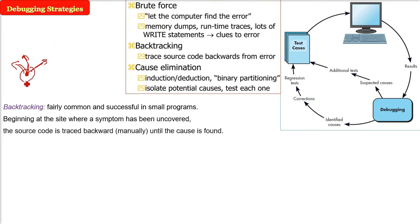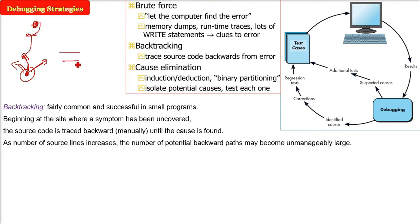Beginning at the site where a symptom has been uncovered, the source code is traced backward manually until the cause is found. It is for small programs. As the number of source lines increases, the number of potential backward paths may become unmanageably large.